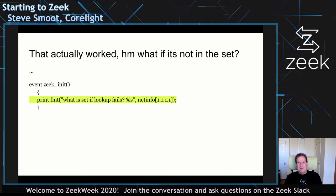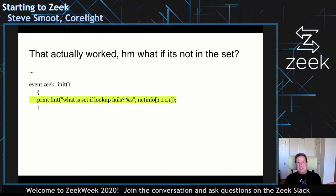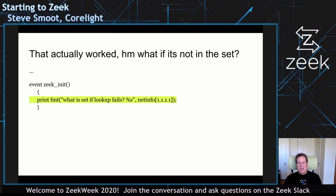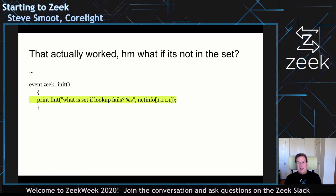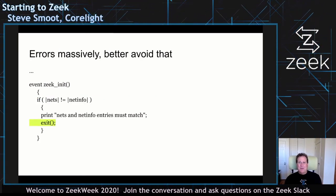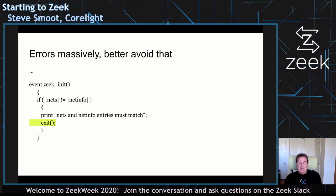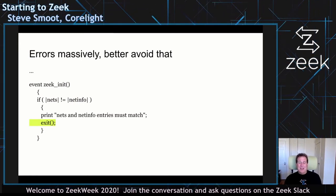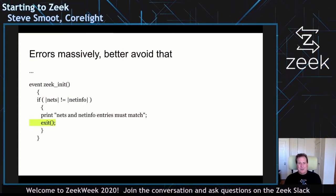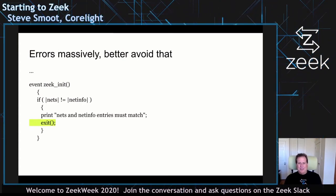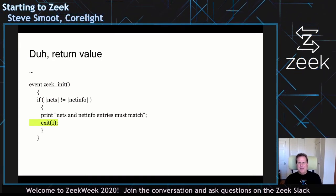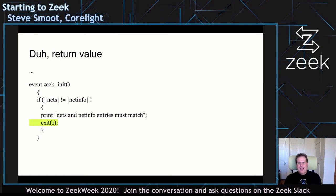I wondered what would happen if something is in nets but not in net_table. I edited Zeek net to test for something that wasn't there — it totally bails. So I put in code to check: do we have the same number of entries in both tables? It's a quick sanity check. If not, give a warning and exit, and you need to provide an exit or return value. Added that.